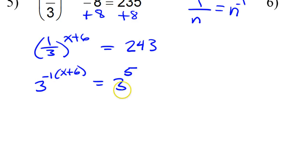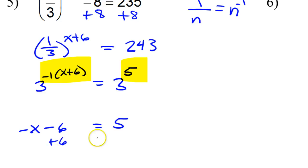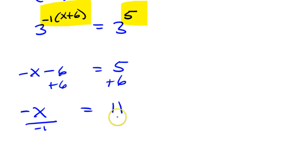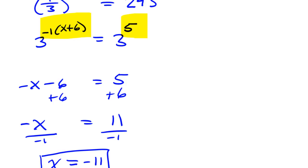Now, if the bases are equal, that means the exponents must be equal. So that means this exponent must equal 5. I'm going to do the distributive property, which gives me negative x minus 6. Now I'm just solving this Algebra 1 problem. I can add 6 to both sides, giving me negative x is equal to 11. We need x, not negative x, so I will divide both sides by negative 1. And x is equal to negative 11. That is the answer to problem number 5.